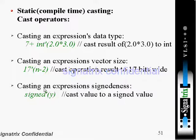Casting an expression's signedness: signed'(y) casts the value to a signed value. This is a compiler directive operator, so the result will be signed.